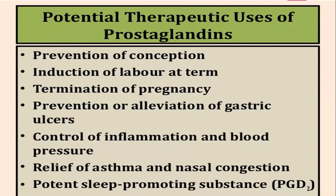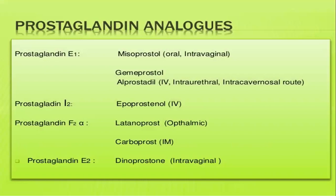Prostaglandins are therapeutically used to prevent conception, induce labor at term, termination of pregnancy, prevention or healing of gastric ulcers, control of inflammation, relief of asthma, and as potency-promoting substances. They can be beneficial in preventing ulcers but are also used to induce labor when required.